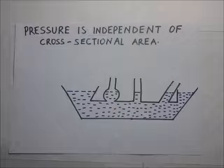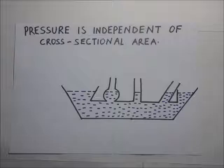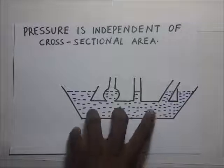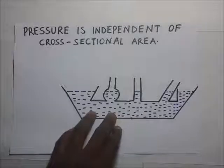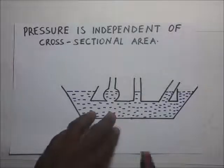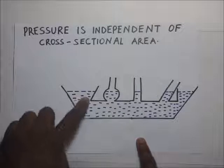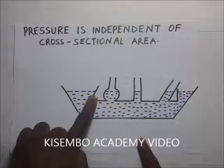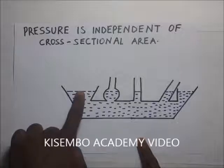To show that pressure is independent of the cross-sectional area or the shape of the container in which it is poured, we have a flask right here. It is constructed in such a way that it has protrusions with different cross-sectional areas.